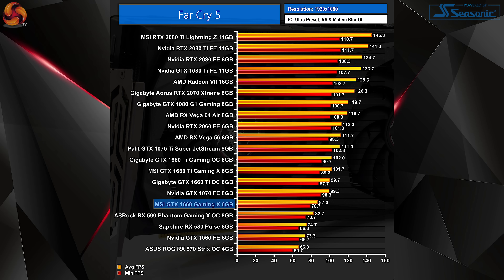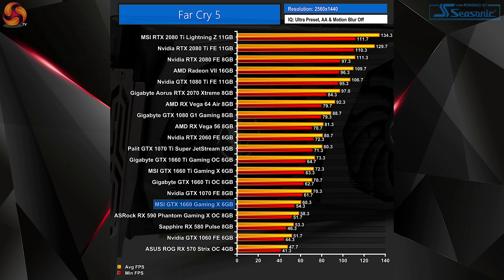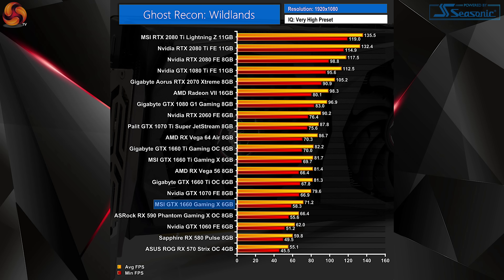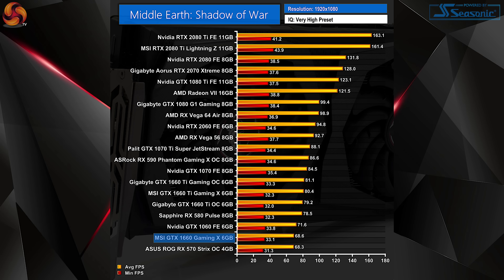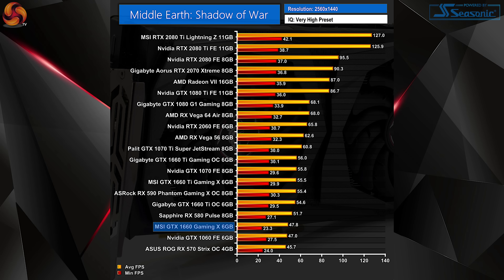Another comparison is with the GTX 1060, where we can see the 1660 outperforming its Pascal cousin by around 15% on average across 1080p and 1440p resolutions. That means you're getting a card that is very capable of playing games at 1080p — even our most demanding titles averaged at least 60fps at 1080p, and easier-to-run games like Battlefield 5 and Far Cry 5 were getting closer to the 70-80fps region.